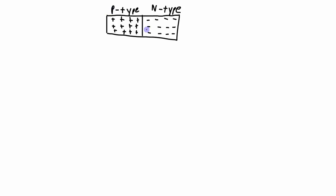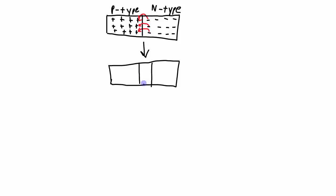If this PN junction is manufactured and just sitting on the lab bench, there's going to be some drift of the extra negative charge carriers over into the holes — the extra positive charge carriers. Negative will join up with positive as this drift occurs. The end result is a PN junction where there's a gap with no extra charge carriers — this region is called the depletion region.